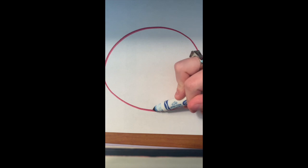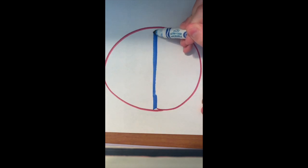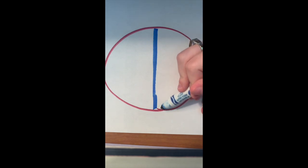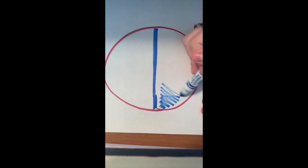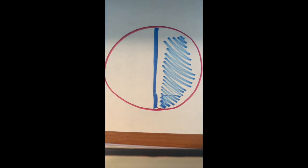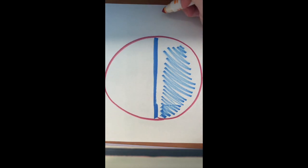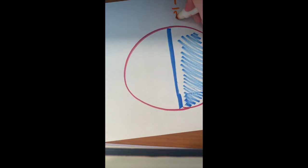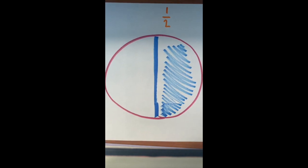So let's talk about equal pieces. When we split something, every piece needs to be equal. So let's practice here — we're going to look at this circle, and this circle is split into two equal pieces. We're going to shade in one of those two pieces. So what fraction is colored in? It would be one over two. We do that because you have one of the two pieces colored in, and you can see each of those pieces is equal to one half.